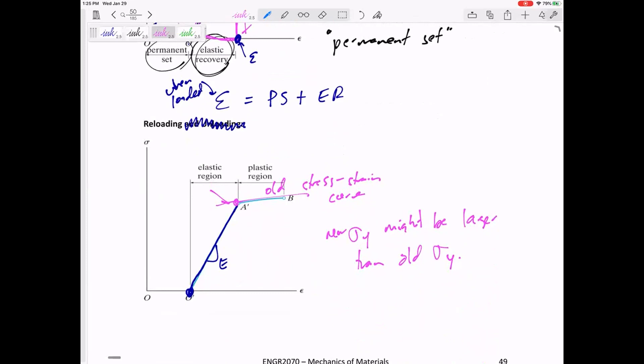So loading something into the yielding region and unloading it is a way to create a new stress-strain curve. A lot of times now you might have a larger yield stress, but you're closer to fracture. Less ductility. Listen up, guys. It's a give and take. You have a larger yield stress, but less ductility.